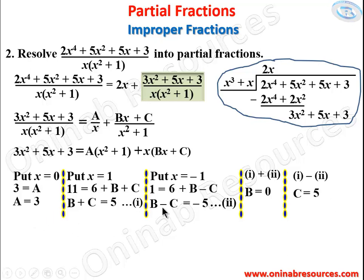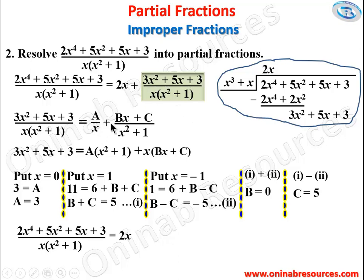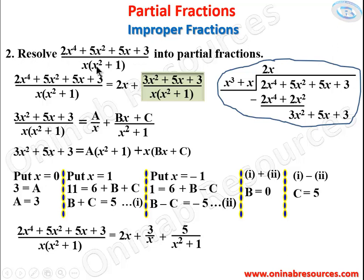Substituting A = 3, B = 0, C = 5, the full result for Problem 2 is: (2x⁴ + 5x² + 5x + 3) / [x(x²+1)] = 2x + 3/x + 5/(x²+1). We have successfully resolved the improper fraction into its partial fractions.